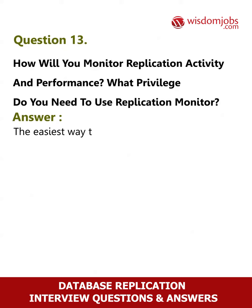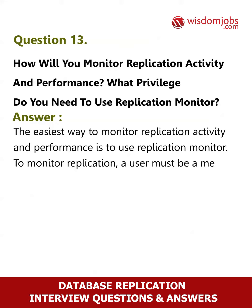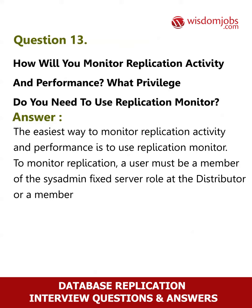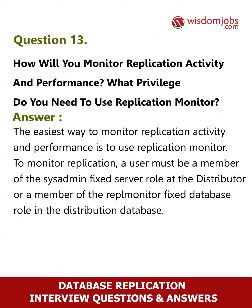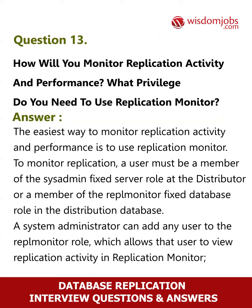The easiest way to monitor replication activity and performance is to use Replication Monitor. To monitor replication, a user must be a member of the sysadmin fixed server role at the distributor, or a member of the REPL_MONITOR fixed database role in the distribution database. A system administrator can add any user to the REPL_MONITOR role, which allows that user to view replication activity in Replication Monitor. However, the user cannot administer replication.